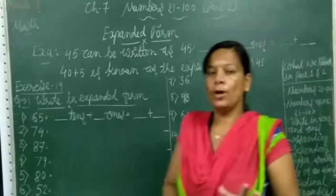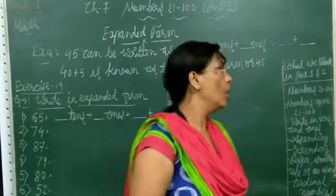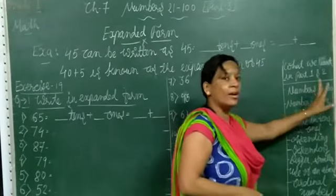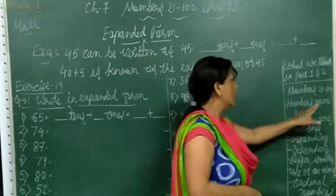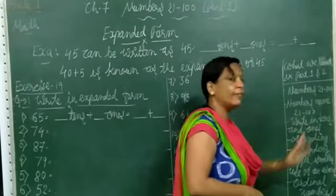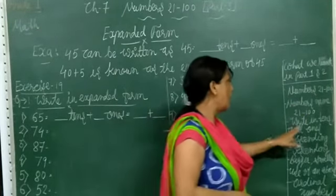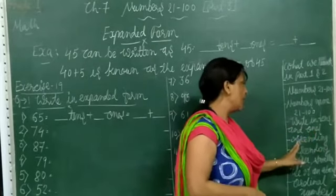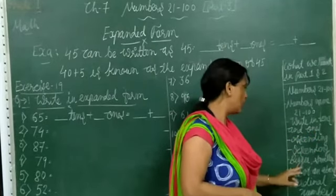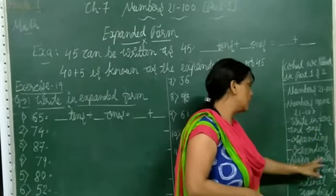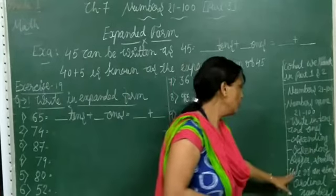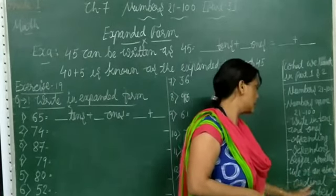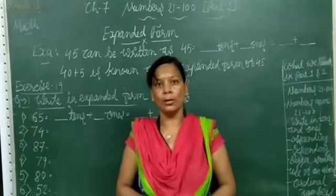You know very well, you have all learned numbers 21 to 100 — writing 10s and 1s, ascending order, descending order, bigger and smaller number, abacus and ordinal number.